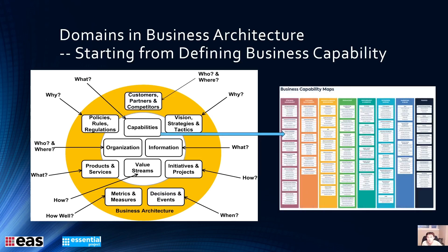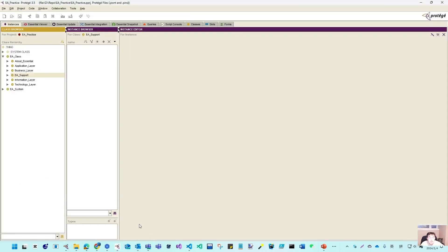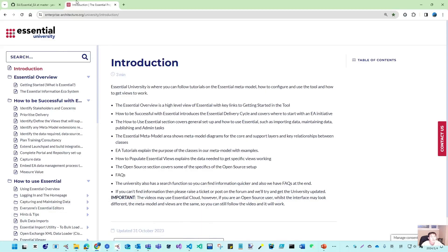For today, what I will do is pick up the capability with a sample. This picture is coming from one of the publicly available samples from LeanIX. They show some generic business capability map. What we are going to do is use our Prodigy to make some capability model, then bring those capabilities to our Weaver so you can see which views can be valid for the capability model shown.